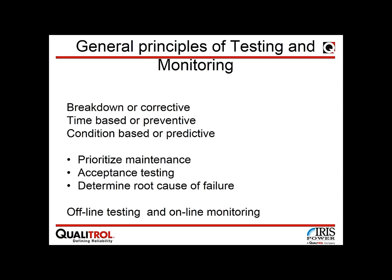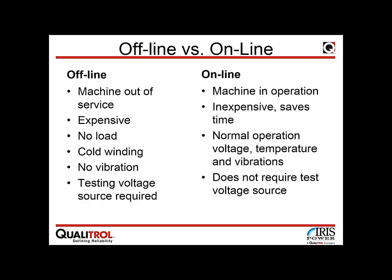An important distinction is between offline testing, where the machine is stopped and instruments simulate conditions for measurement, and online monitoring, where the machine is working and instruments — periodic or continuously installed — monitor the winding or rotor condition. There is also a difference between monitoring and protection: protection stops the machine to minimize damage, while monitoring improves knowledge about condition without tripping the machine from service.